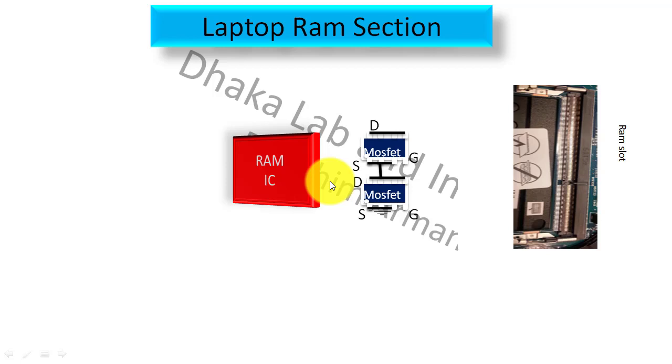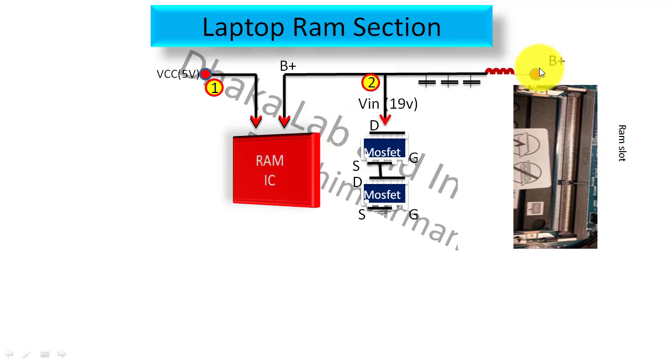First, there will be 5 volt VCC and before that there will be B+, which may be 19 volt adapter voltage or battery voltage. B+ will enter by a coil and then after capacitor, B+ will enter into RAM IC and B+ will also enter into the first MOSFET drain.